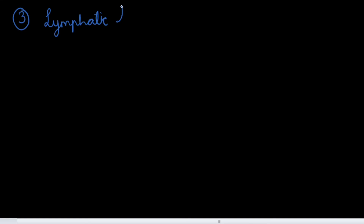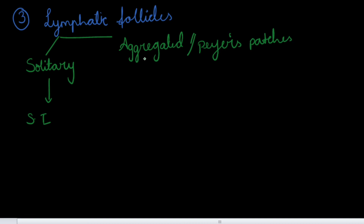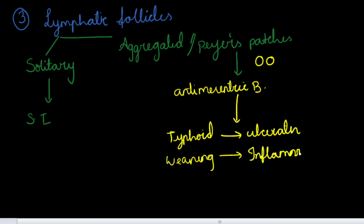The third special feature is lymphatic follicles. There are two types: solitary lymphatic follicles, which are present throughout the small intestine, and aggregated lymphatic follicles, also called Peyer's patches. Peyer's patches are oval or circular in shape and are mainly present in the antimesenteric border of the intestine. Clinically, in typhoid disease we can see ulceration of Peyer's patches. During weaning in the pediatric age group, inflammation of Peyer's patches can lead to intussusception or intestinal obstruction.